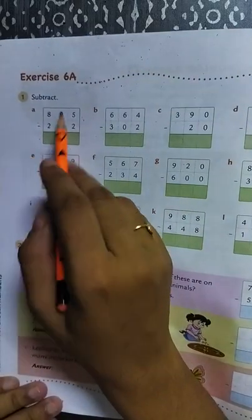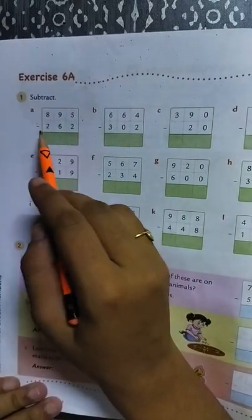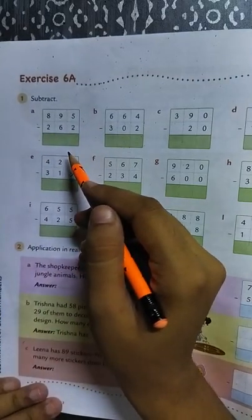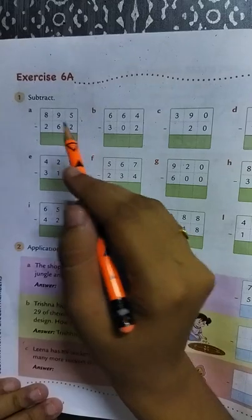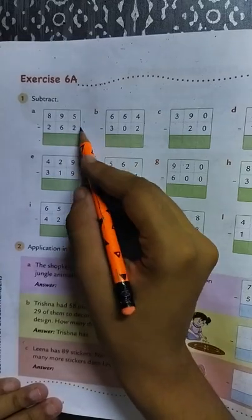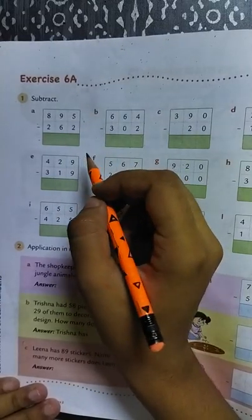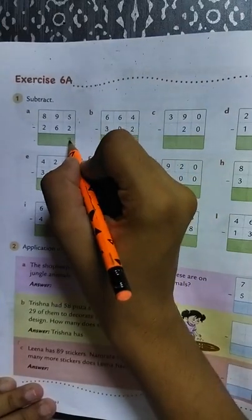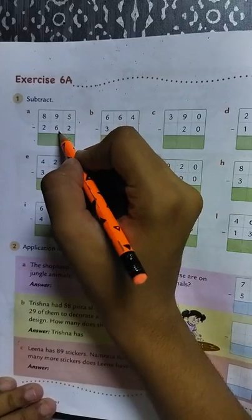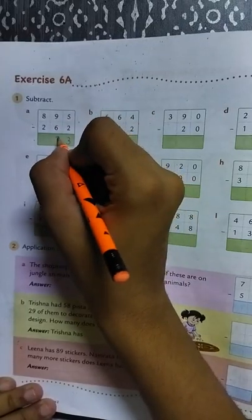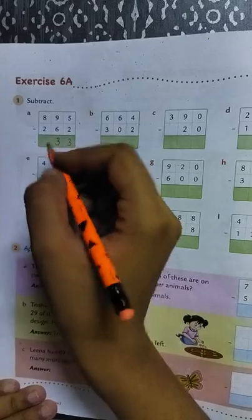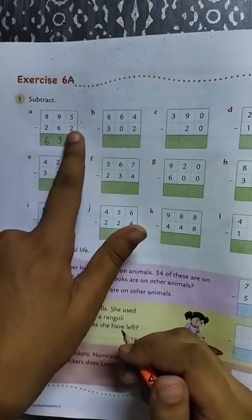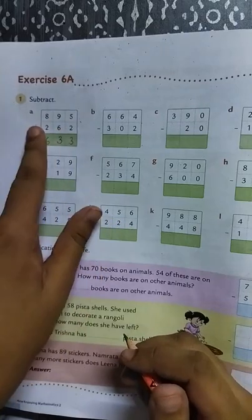So the first question is subtract 895 minus 262. In addition we start from the right side. In subtraction also we start from the right side. First we will start from the one's place. 5 minus 2 is 3. 9 minus 6 is 3. And 8 minus 2 is 6. So first we will subtract one's place, then ten's place, and then hundred's place.